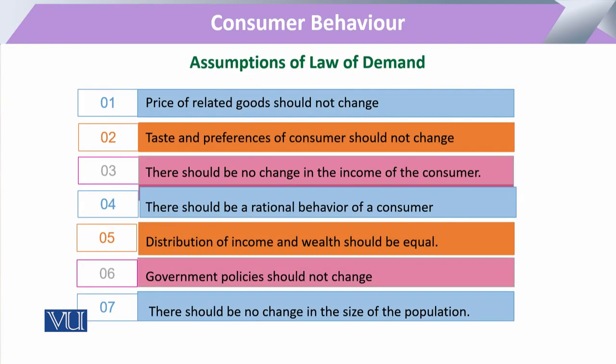Now coming to the assumptions: we assume that the price of related goods should be kept constant. The commodity for which we have made the demand function — we consider only the change in that commodity's own price. Other goods in the consumption bundle — whether complements, substitutes, or other normal goods — we keep all their prices constant. Not only prices, but for that particular time of analysis, the consumer's taste and preference is also kept constant.